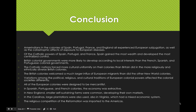In conclusion, Ameri-Indians in the colonies of all European powers — Spanish, Portuguese, French, and English — all experienced European subjugation as well as the catastrophic effects of exposure to European diseases. Of the Catholic powers, Spain gained the most wealth and developed very centralized control of the vice royalties. British colonial governments were more likely to develop according to local interests than the French, Spanish, and Portuguese. Within the colonies, there were small local governments that had some say over what would happen within towns and cities, and that's going to play a really important role when we start talking about revolutions and the formation of new countries, specifically the USA as opposed to new nation states in South America.